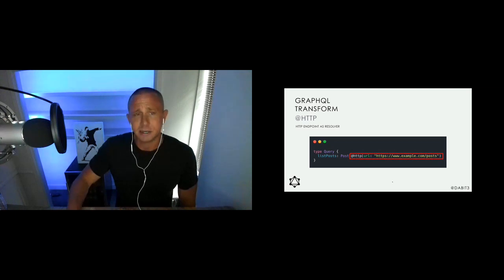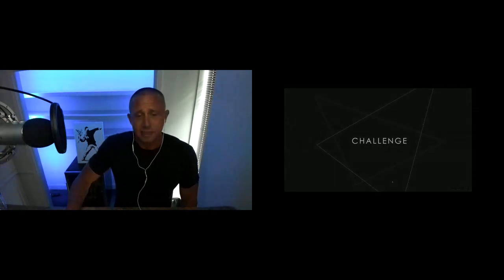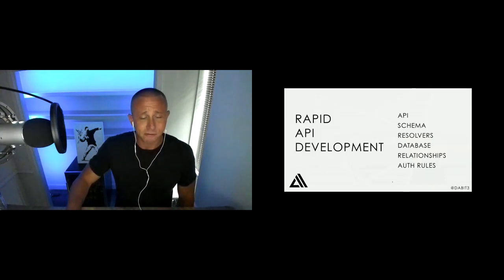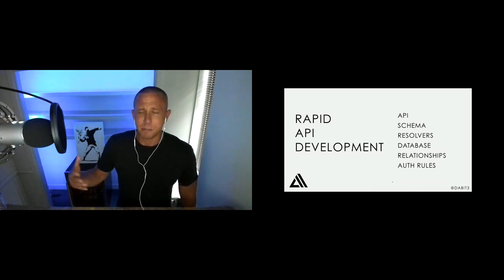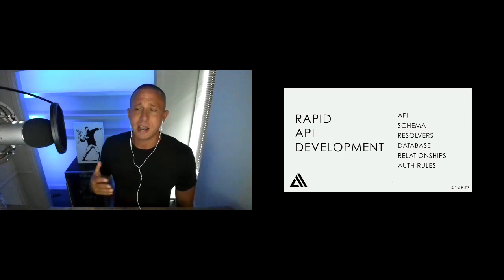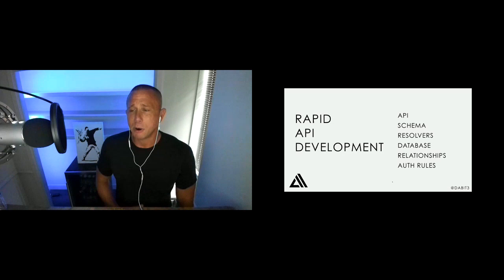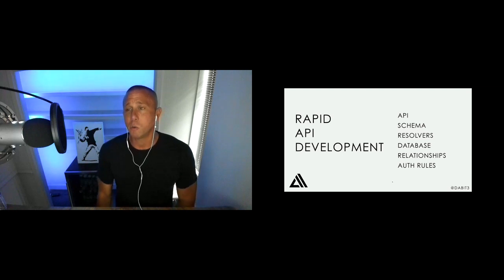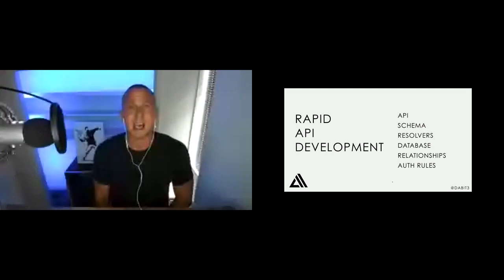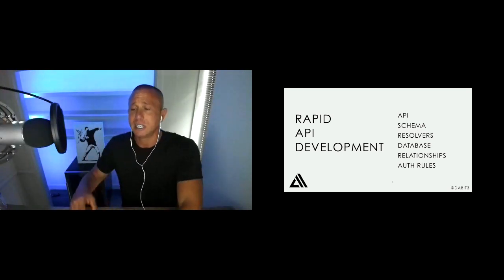Now I want to do a live demo and scaffold out an API. I want to have a couple of different types with full CRUD schema, database tables for both types, resolvers for all operations, a one-to-many relationship, auth rules, and additional data access patterns using the @key directive.